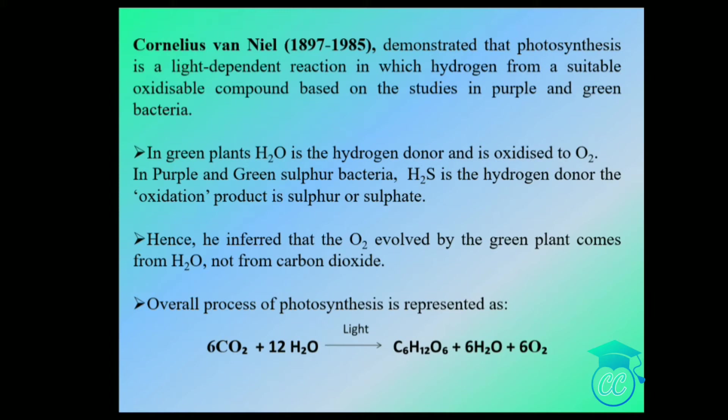A milestone contribution to the understanding of photosynthesis was made by microbiologist Cornelius van Neel. He demonstrated that photosynthesis is a light-dependent reaction in which hydrogen from a suitable oxidizable compound is used, based on studies in purple and green sulfur bacteria.